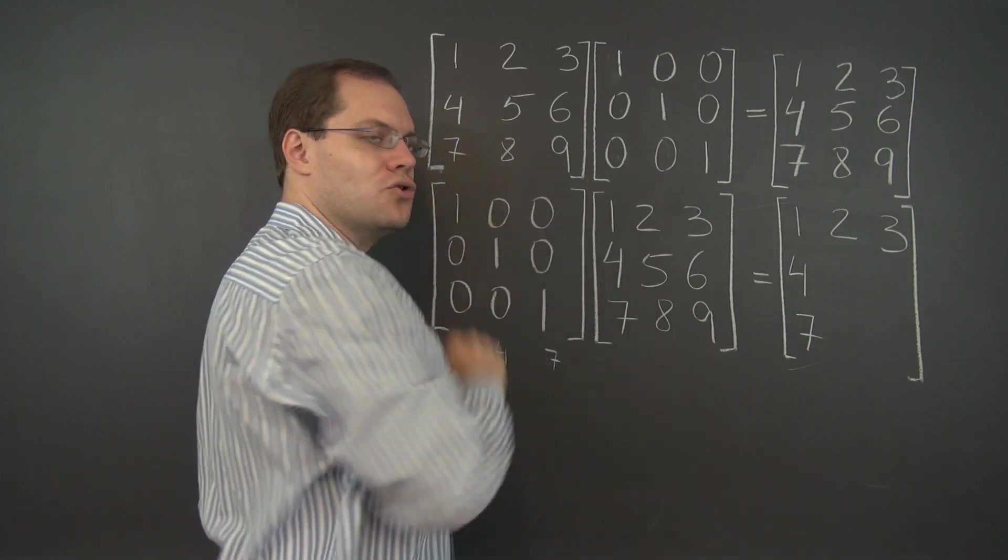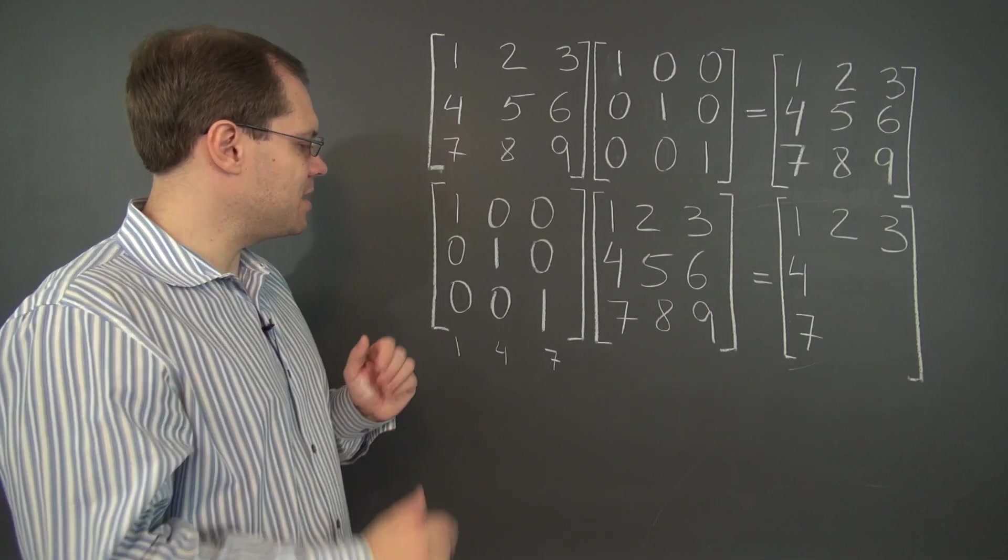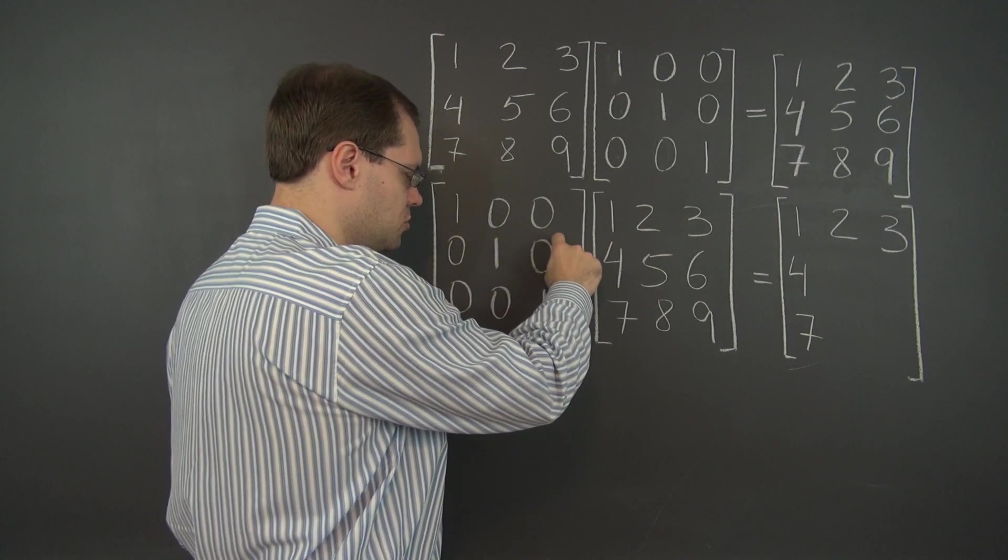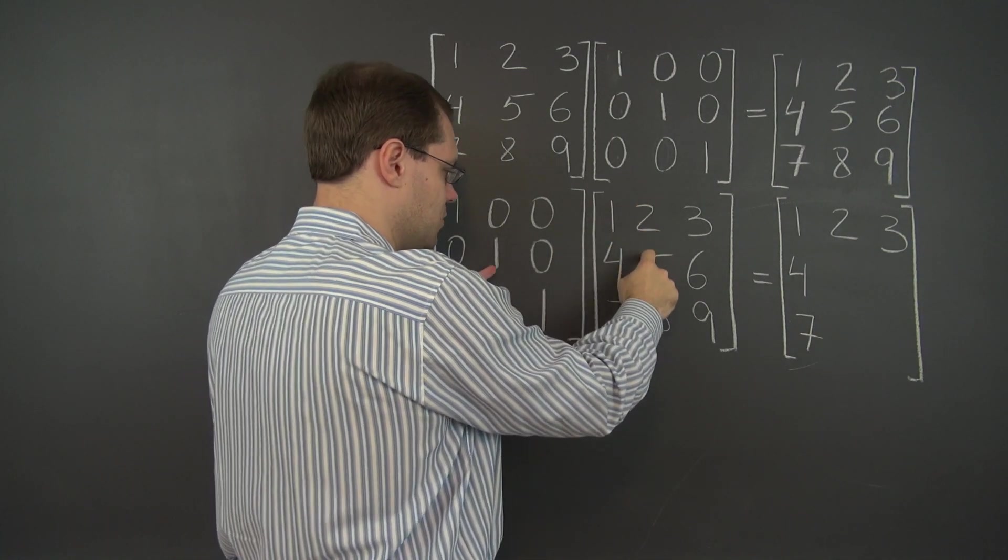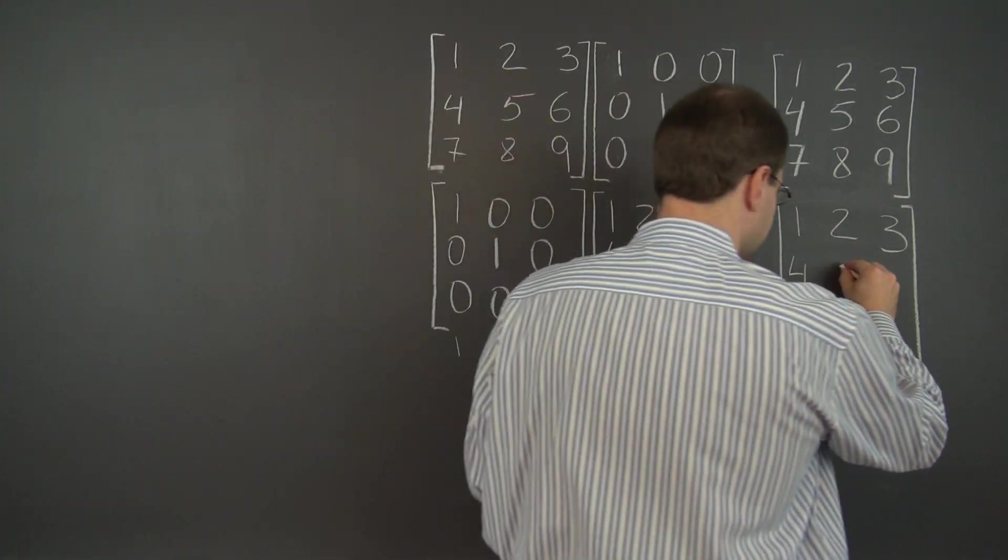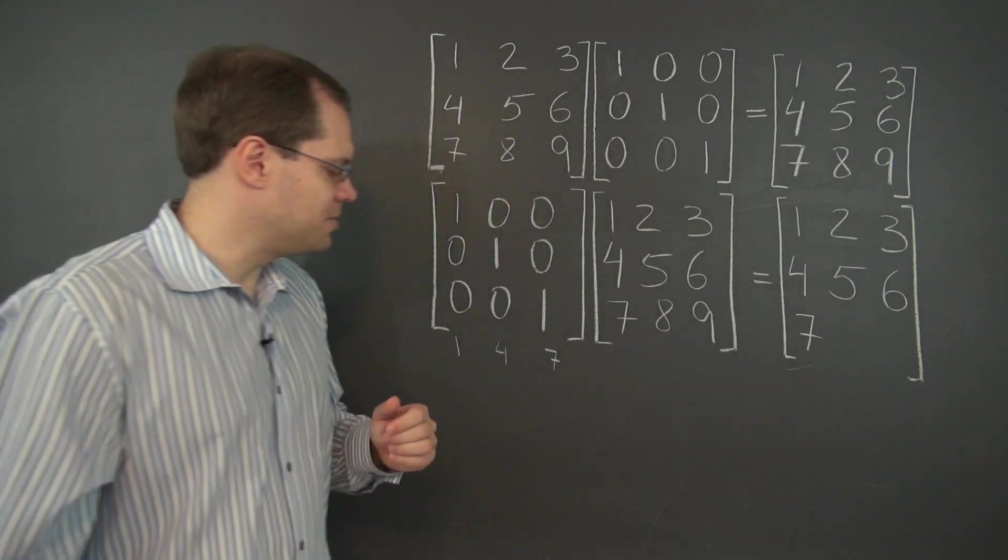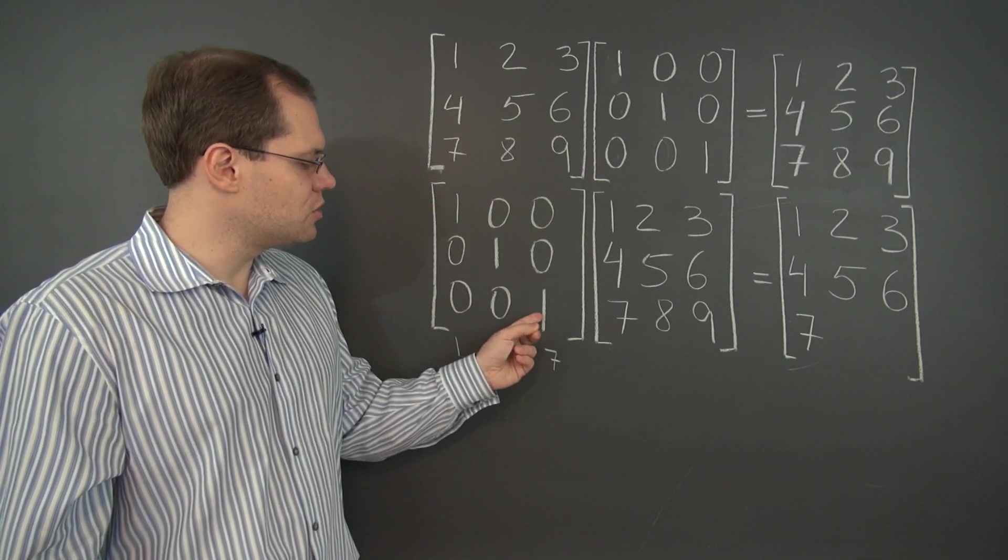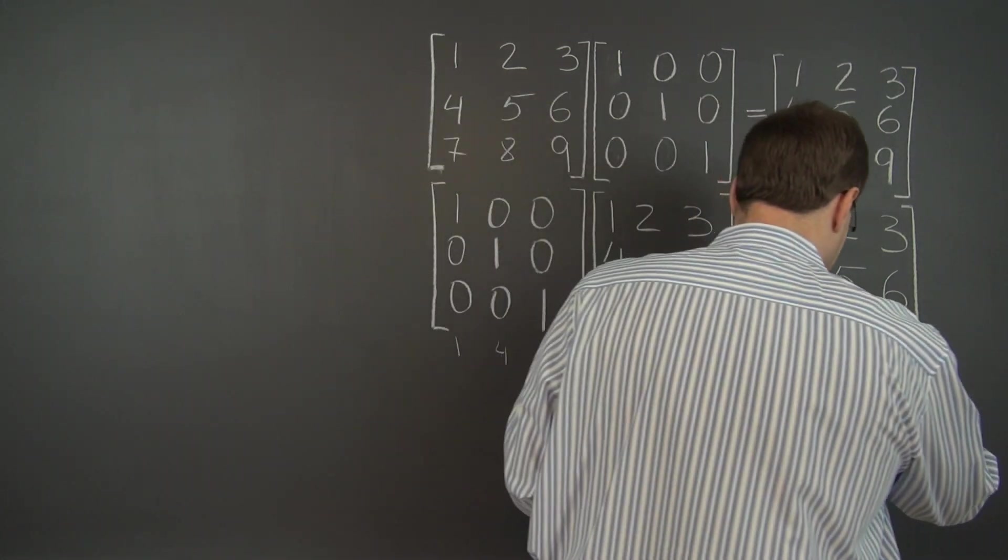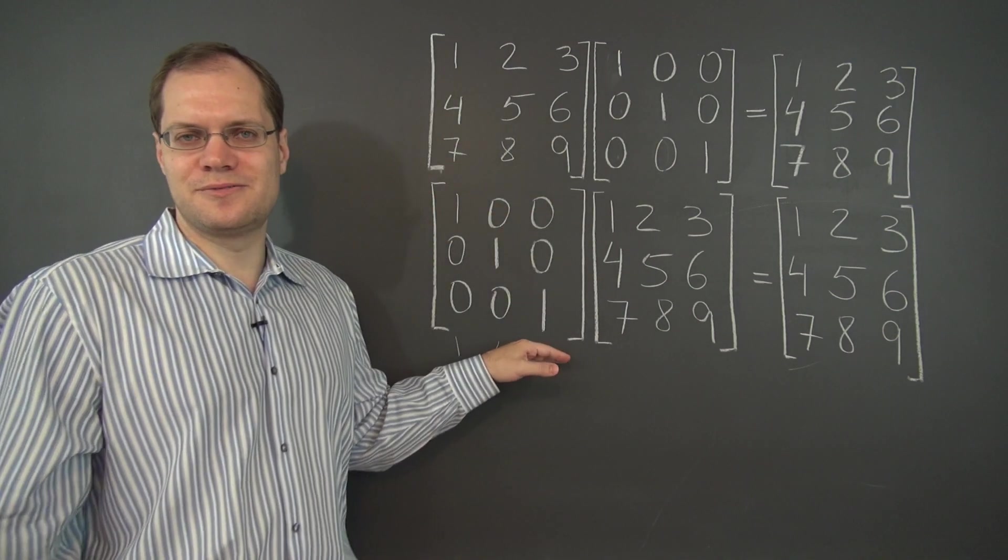So this was a column picker when it appeared on the right. This is a row picker when it appears on the left. And that's the semi-big picture perspective on this product. Of course this row will take 0 of this, 1 of this, 0 of this, and will just pick out the second row, 4, 5, 6. The perspective is different, the numbers would have been the same either way. And this row will pick out the third row of this matrix, 7, 8, 9. So the semi-big picture is that these are row pickers.